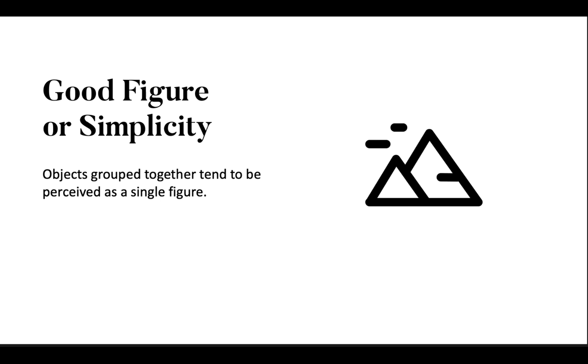Let's break down each type of grouping. Good figure or simplicity refers to objects that are grouped together tend to be perceived as a single figure. In the image, we see mountains instead of two triangles. When shapes are grouped together, our mind reads them as one subject or object.